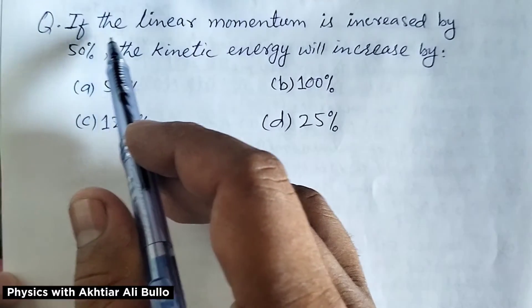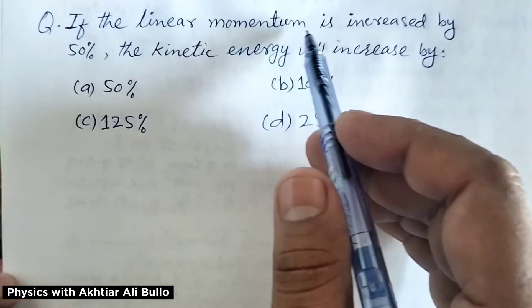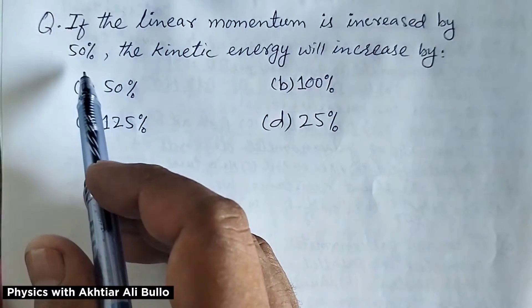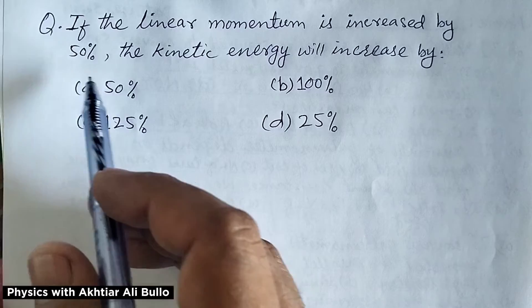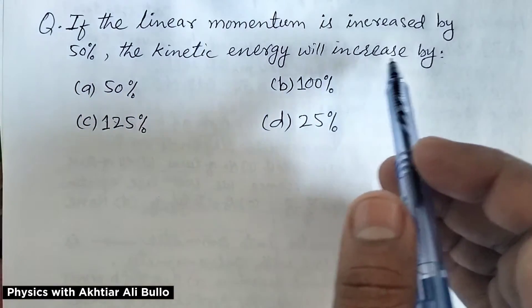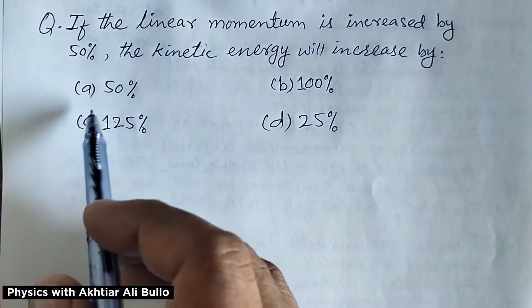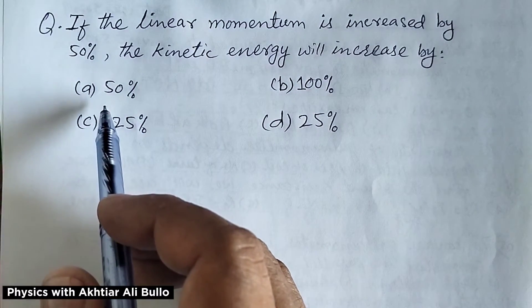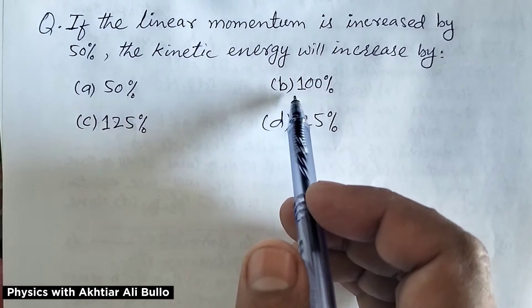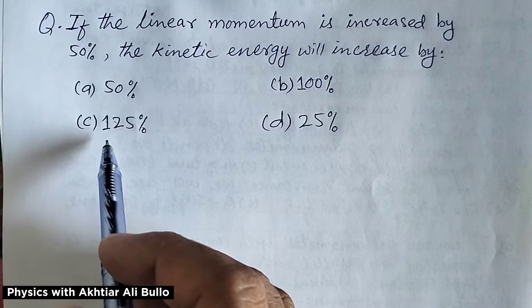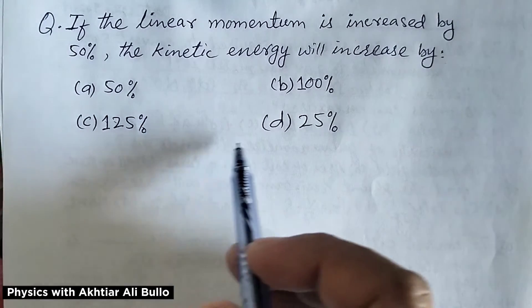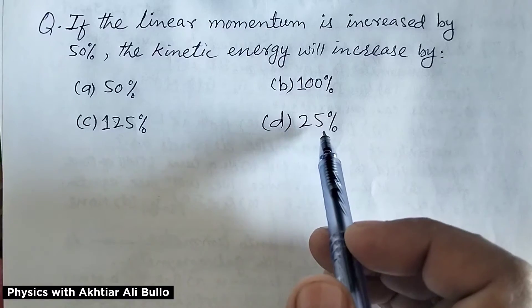The question is: if the linear momentum is increased by 50%, the kinetic energy will increase by — a. 50%, b. 100%, c. 125%, d. 25%.